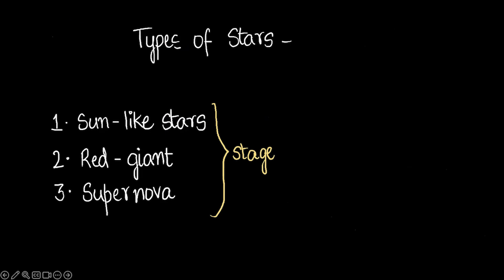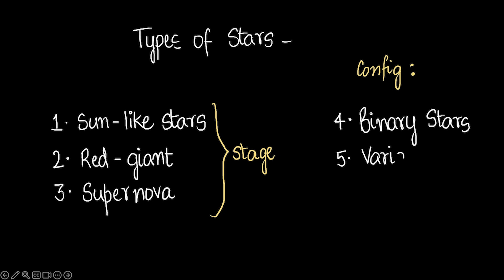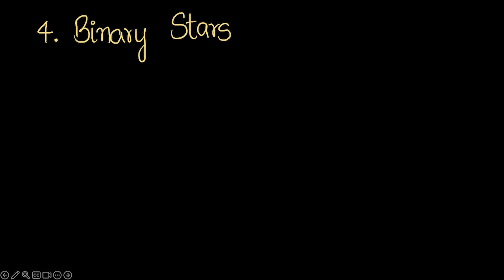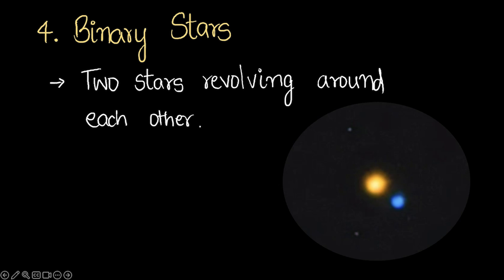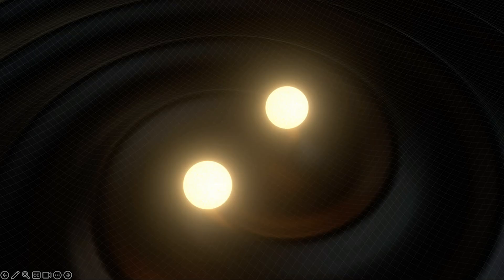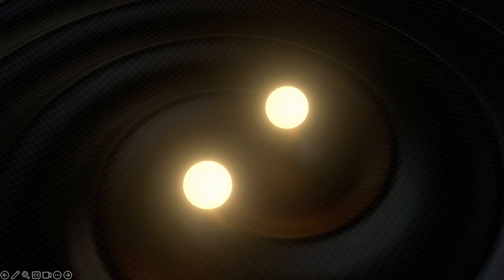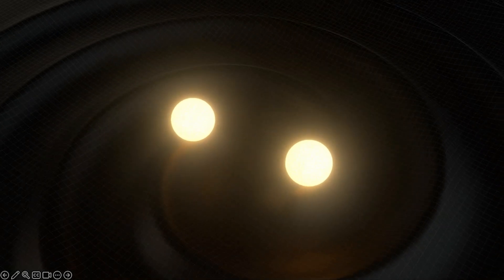Now we've discussed types of stars based on their life stage. Let's discuss two more types based on their configuration: binary stars and variable stars. Binary stars, as the name suggests, refers to two stars revolving around each other. Here's a picture showing star one and star two — two stars close to each other, revolving around one another. Let me show you a short animation so you can better visualize how these stars revolve around each other. Fascinating, isn't it?